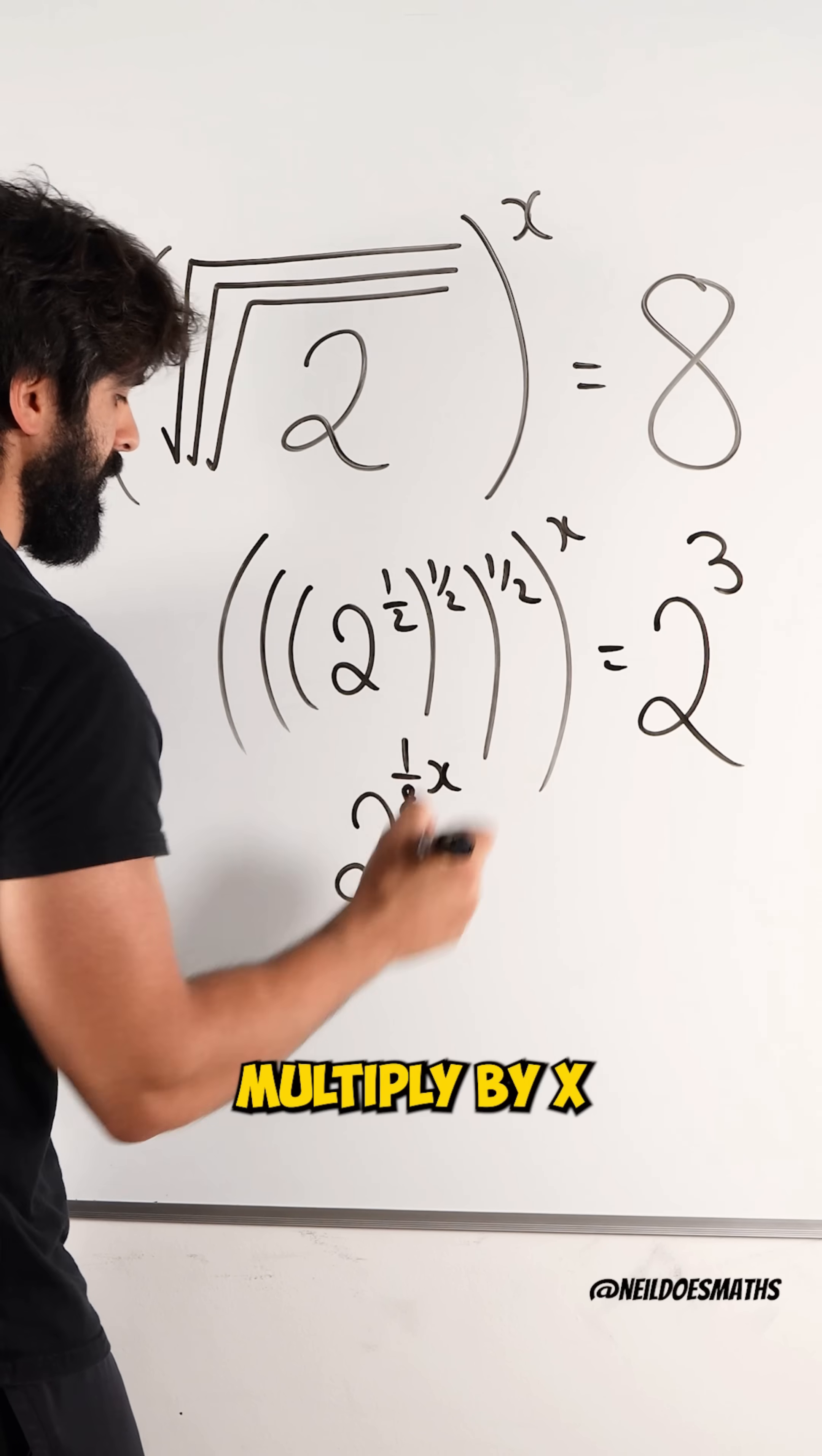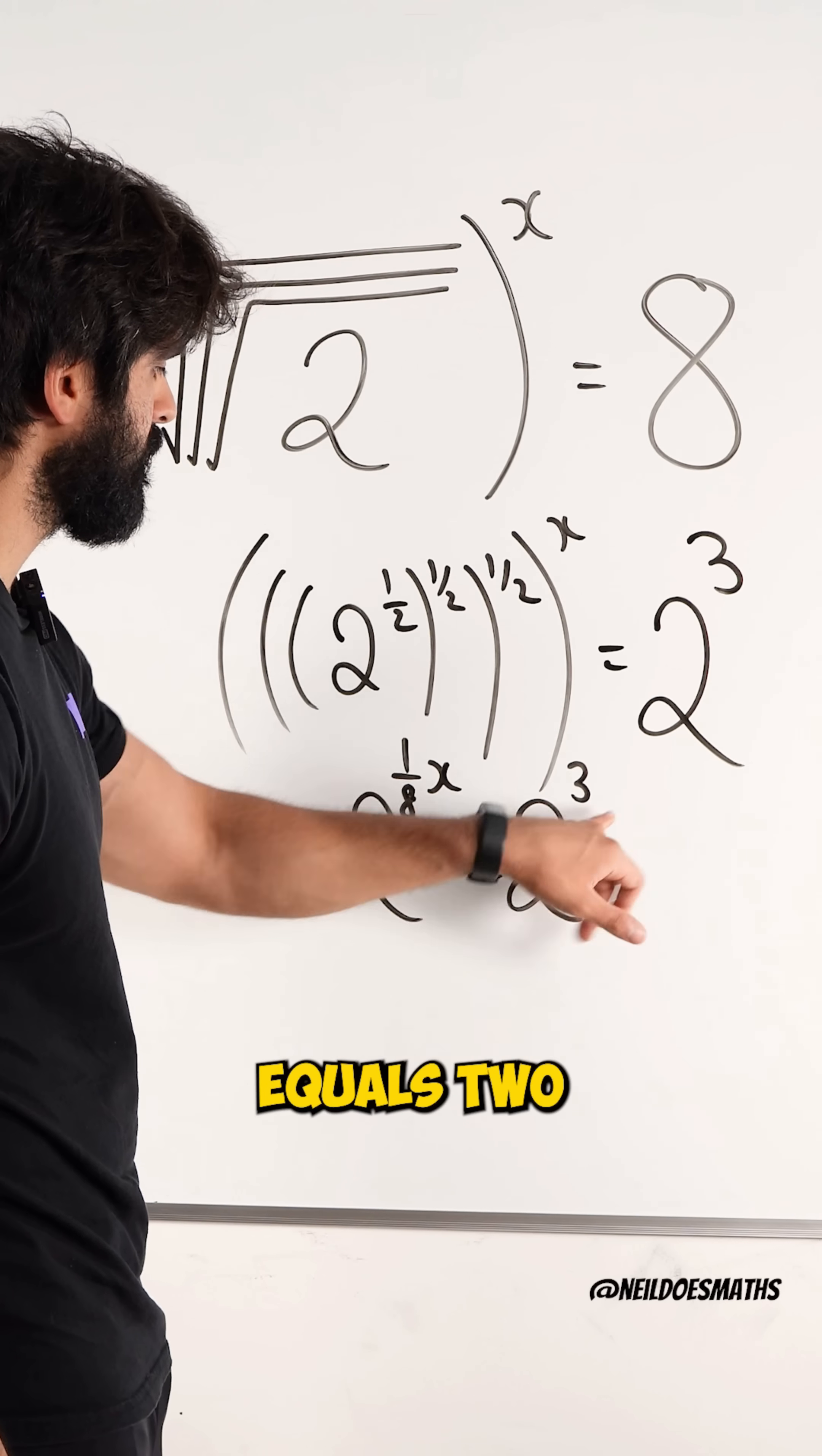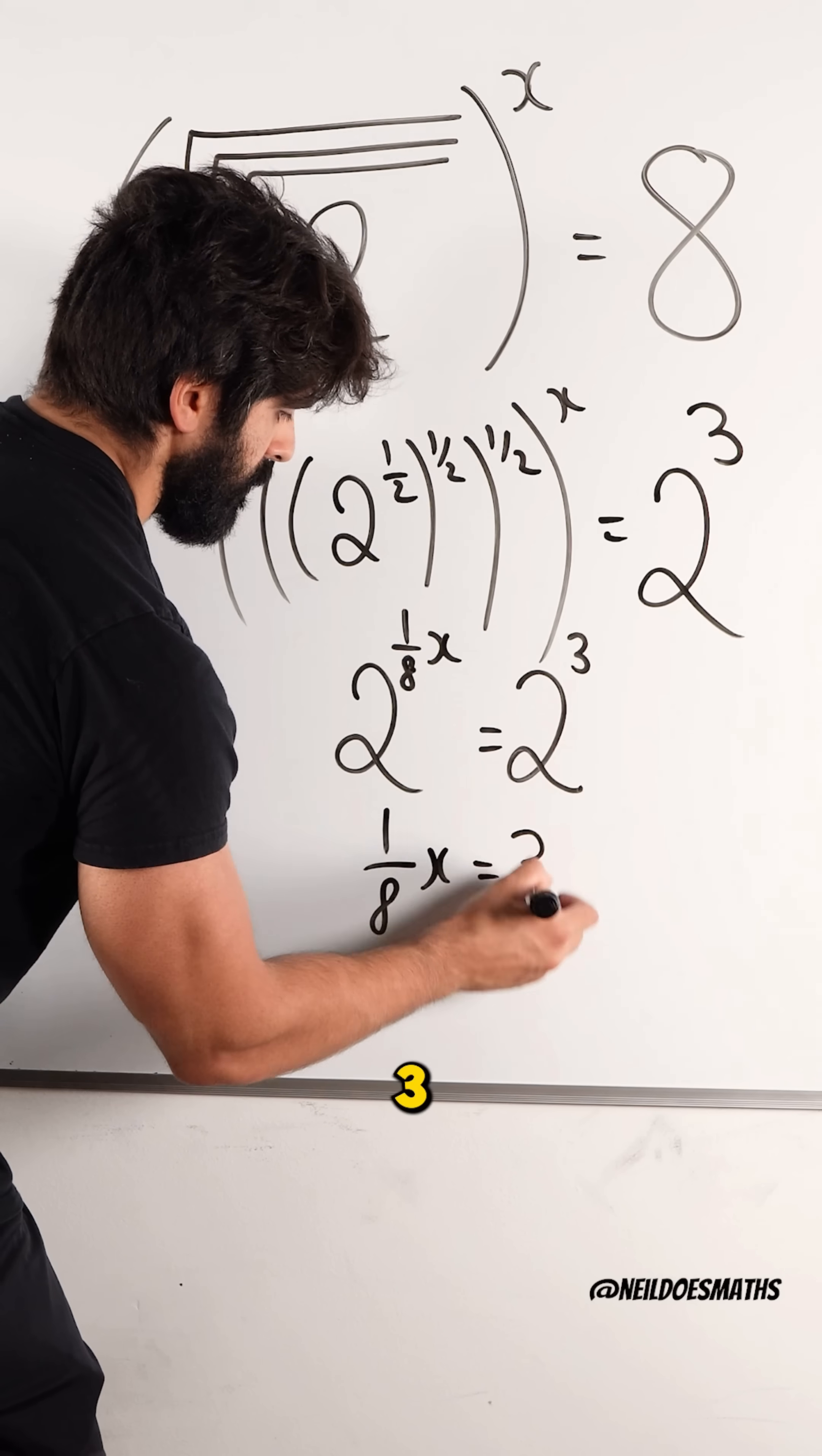And then we have multiplied by X equals 2 cubed. 2 to the power of something equals 2 to the power of something. The only way they're the same is if the powers are the same. So, you have 1 eighth X is 3.